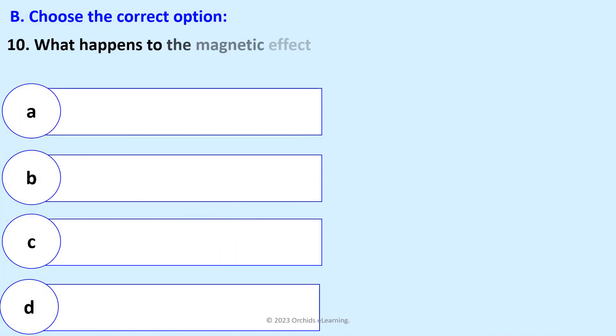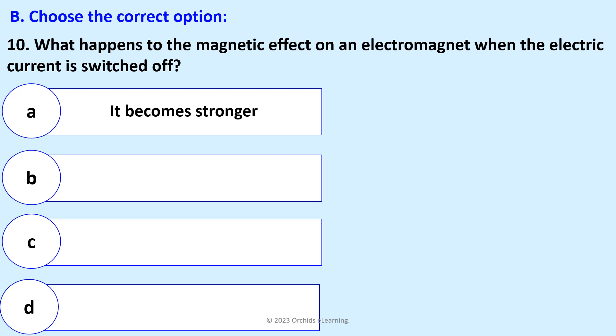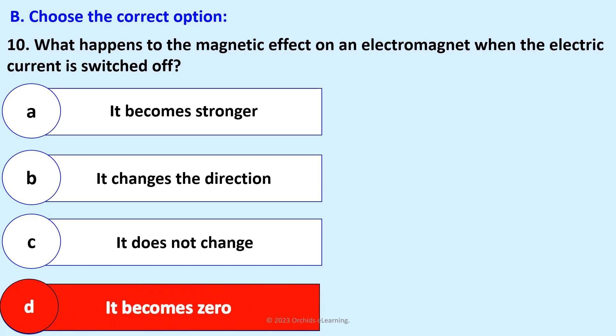The iron piece becomes magnetic. What happens to the magnetic effect on an electromagnet when the electric current is switched off? It becomes zero.